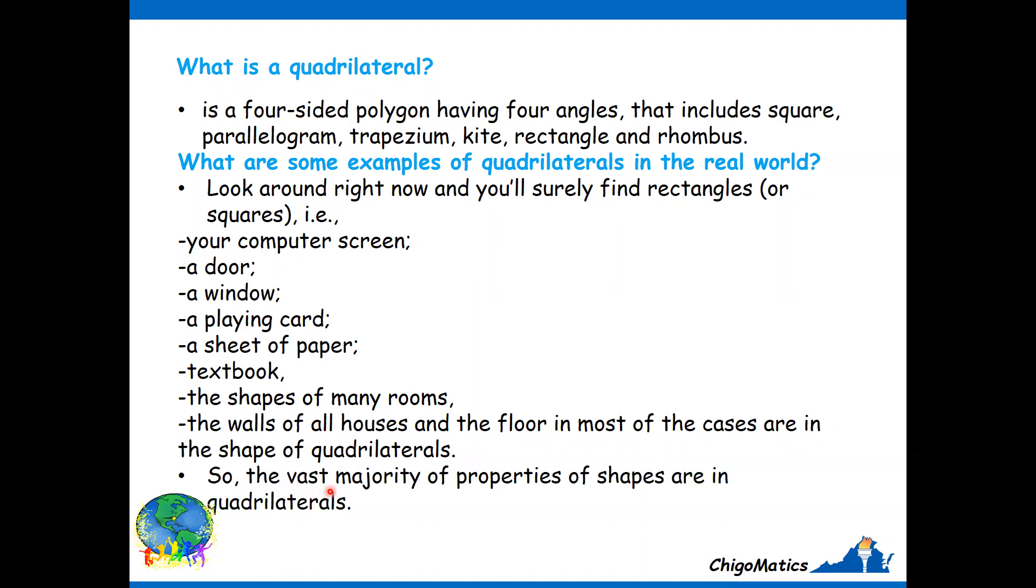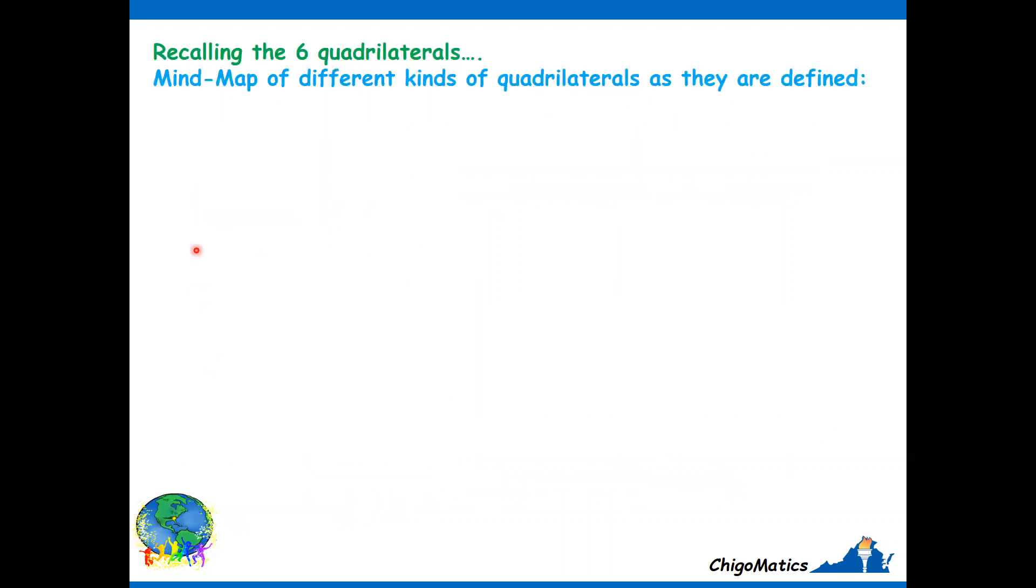The walls of all houses and the floor in most of the cases are in the shape of quadrilaterals. So, the vast majority of properties of shapes are in quadrilaterals.